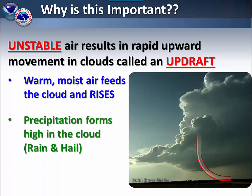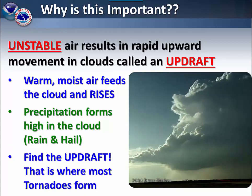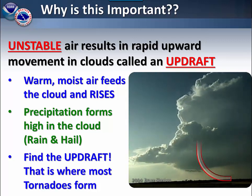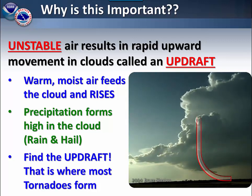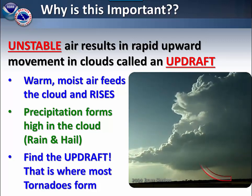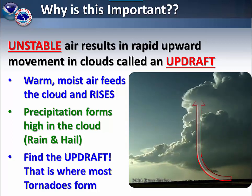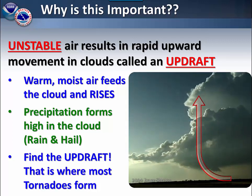Unstable air results in a rapid upward movement in the clouds called an updraft. You can see this particular updraft in the video shown by the red arrow pointing upward. Warm moist air will feed the cloud and the air will continue to rise. Precipitation begins to form high up in the cloud, including both rain and hail. It is important to find out where the updraft is — this is where most tornadoes will form.